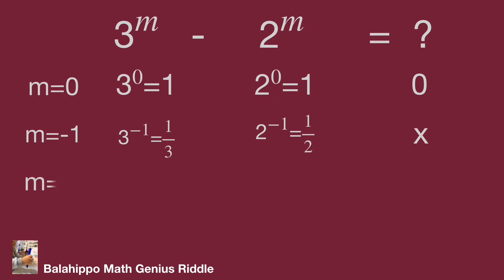While m equals minus 2, 3 power of minus 2 equals 1 over 9, 2 power of minus 2 equals 1 over 4. 1 over 9 minus 1 over 4 is not an integer.